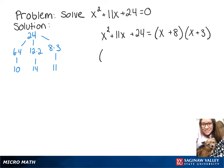So x plus 8 times x plus 3 is going to be equal to 0. Now we can break that up and just put each of those equal to 0. So we're going to solve either x plus 8 is equal to 0 or x plus 3 is equal to 0.